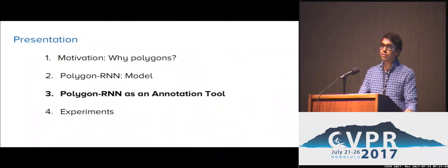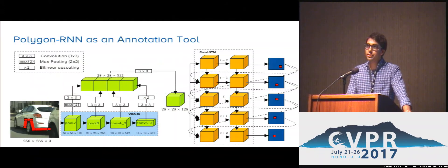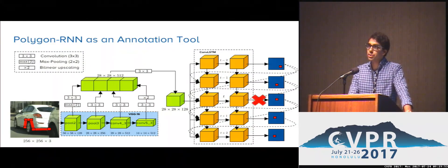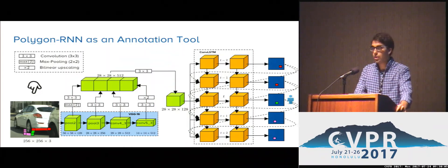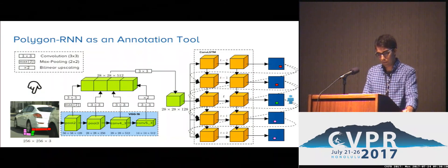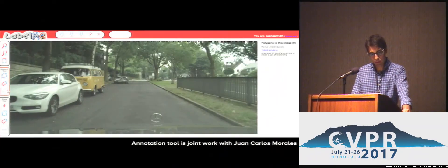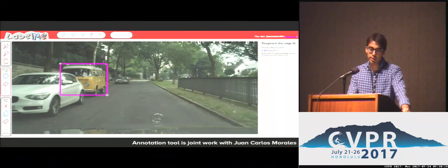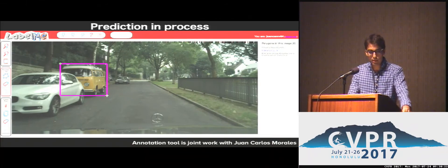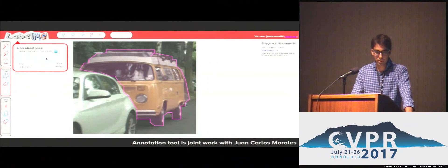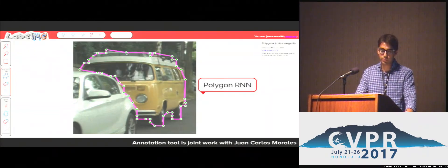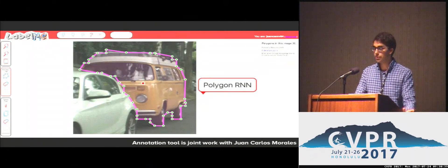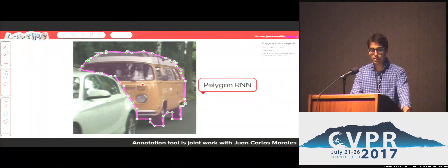Now I'm going to show how we can use Polygon RNN as an annotation tool. One of the predicted vertices might be wrong. A user can correct this vertex by selecting a new location in the output map. This correction is then fed into the model, which uses it to update its prediction and continue predicting the polygon. In practice, a user draws a bounding box around the instance to annotate. This bounding box doesn't need to be perfectly tight, but the instance needs to be roughly centered. The model then generates a first prediction. Some of the vertices in this prediction might be wrong, and a user can correct the location of these vertices. These corrections are then used by the model to generate a new and refined segmentation. As we will see in this example, the roof of the van is now correctly segmented.